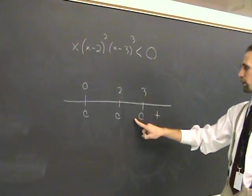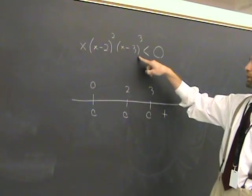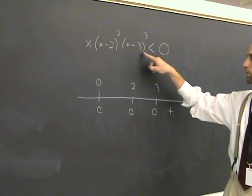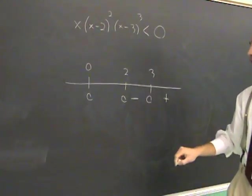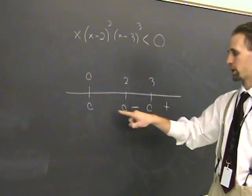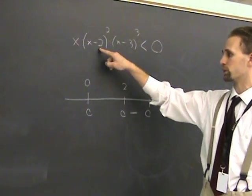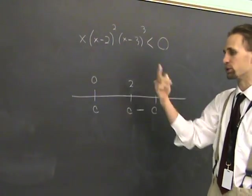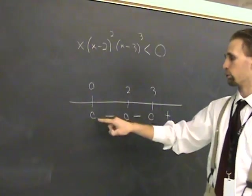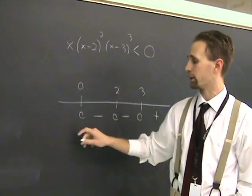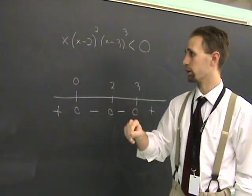Will we get a sign change across 3? Yes, because it appears an odd number of times. This factor will change sign going over here, thus changing the sign of the whole thing. Will we get a sign change across 2? No, because this x minus 2 factor doesn't change sign over here. So no sign change. Will we get a sign change across 0? Yes, because it appears an odd number of times.